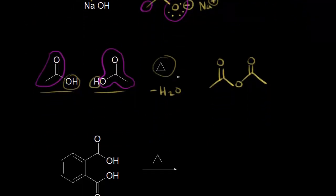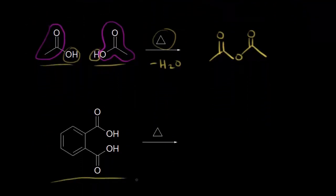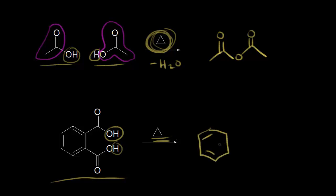Here's one more case where dehydration can work — phthalic acid, which is a dicarboxylic acid. If you apply heat, you don't need as high a temperature as in the previous reaction. You can once again form an anhydride by dehydration — losing OH from one carboxyl and H from the other. The product is phthalic anhydride, formed by drawing the benzene ring with the anhydride group attached. This is a good way to form five- or six-membered rings; in this case we have a five-membered ring containing carbon, oxygen, carbon, carbon, and carbon.